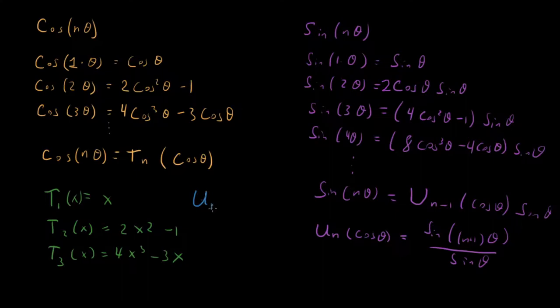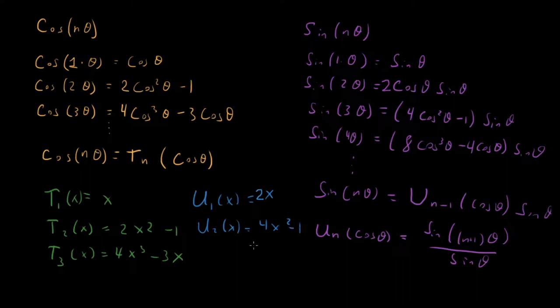Let's write out a couple of these U_n polynomials. U_1(x) equals x. U_2(x) equals 4x² minus 1. U_3(x) equals 8x³ minus 4x.